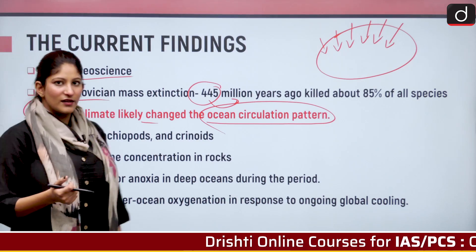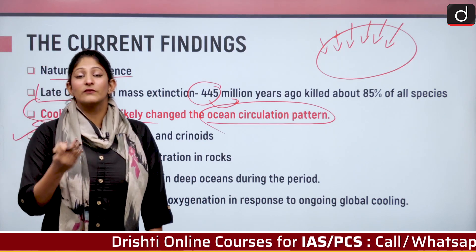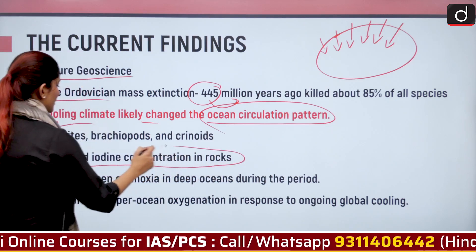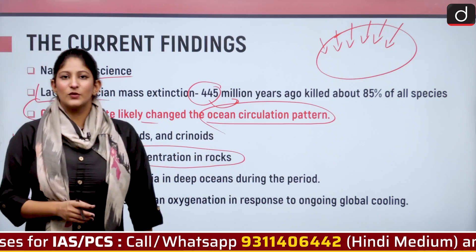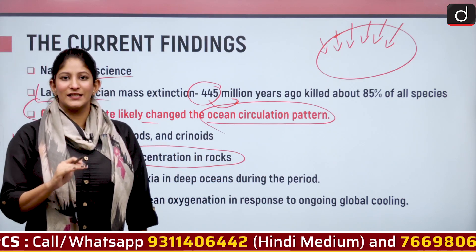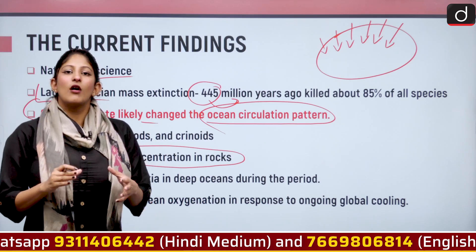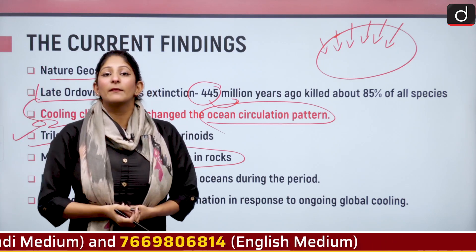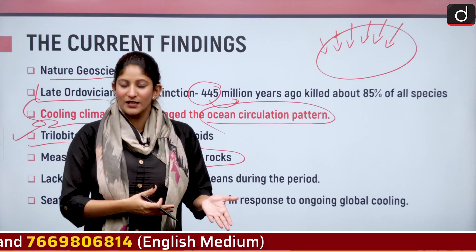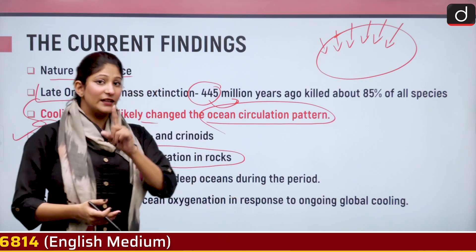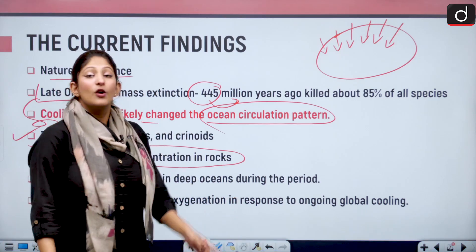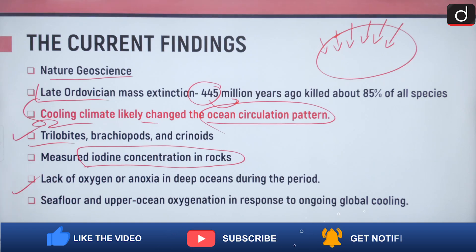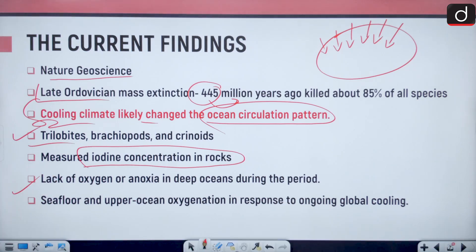This was known through a technology that measured iodine concentration in the rocks. Because of excessive cooling, the sea level went down. Also, because of the exposure of silicate rocks, more and more carbon dioxide was absorbed by these rocks, causing further cooling — related to the ice age. Lack of oxygen, or anoxia, in deeper oceans during this period was one of the primary reasons for this first mass extinction.